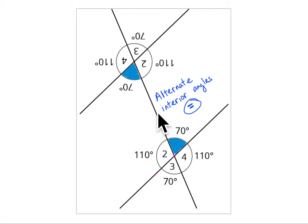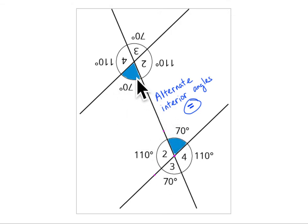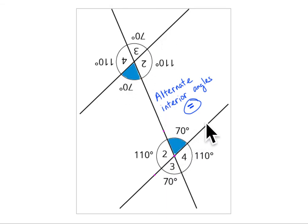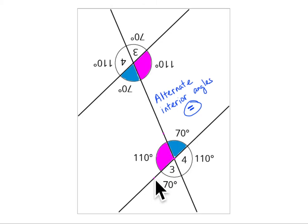The rotation goes around the midpoint and lands right there. Interior means on the inside, between the two parallel lines. So this is an alternate interior angle equal to 70 degrees, and this is an alternate interior angle equal to 110 degrees. That makes sense because both of these angles have to add to 180 degrees — a straight line.